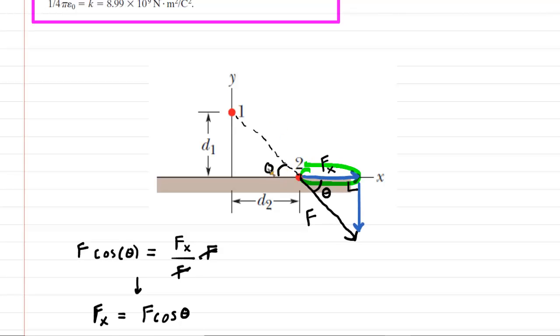That angle that we've drawn within the triangle is the same as this angle right here. And so if we look at this triangle, we know some values here. Remember, d2 had a value of 6 millimeters. And then the hypotenuse we figured out earlier was the square root of 40 millimeters.